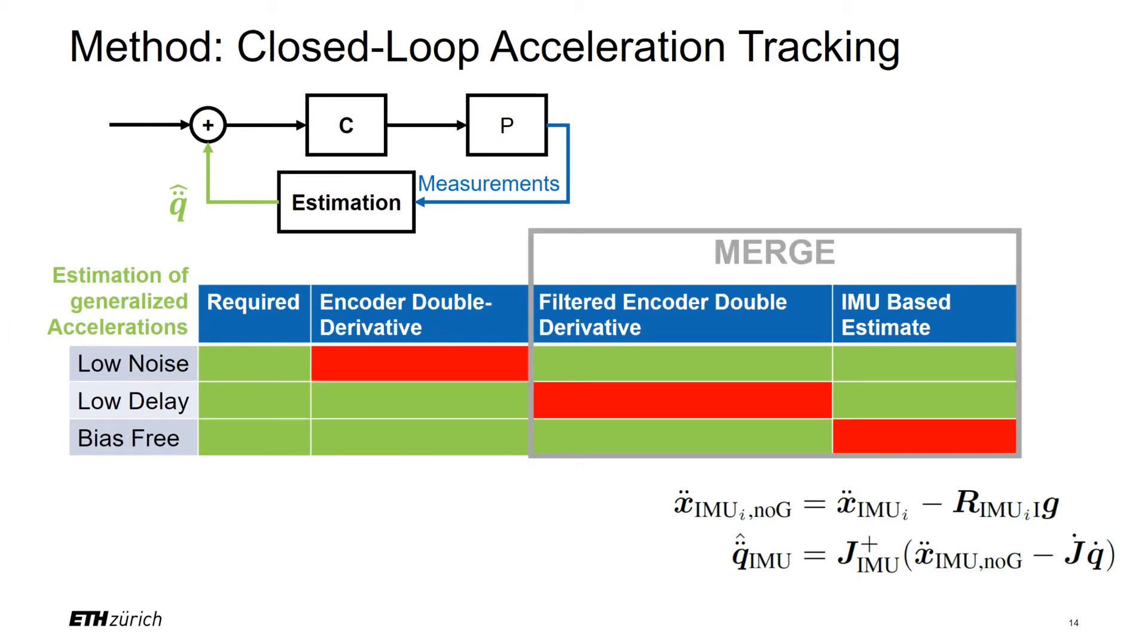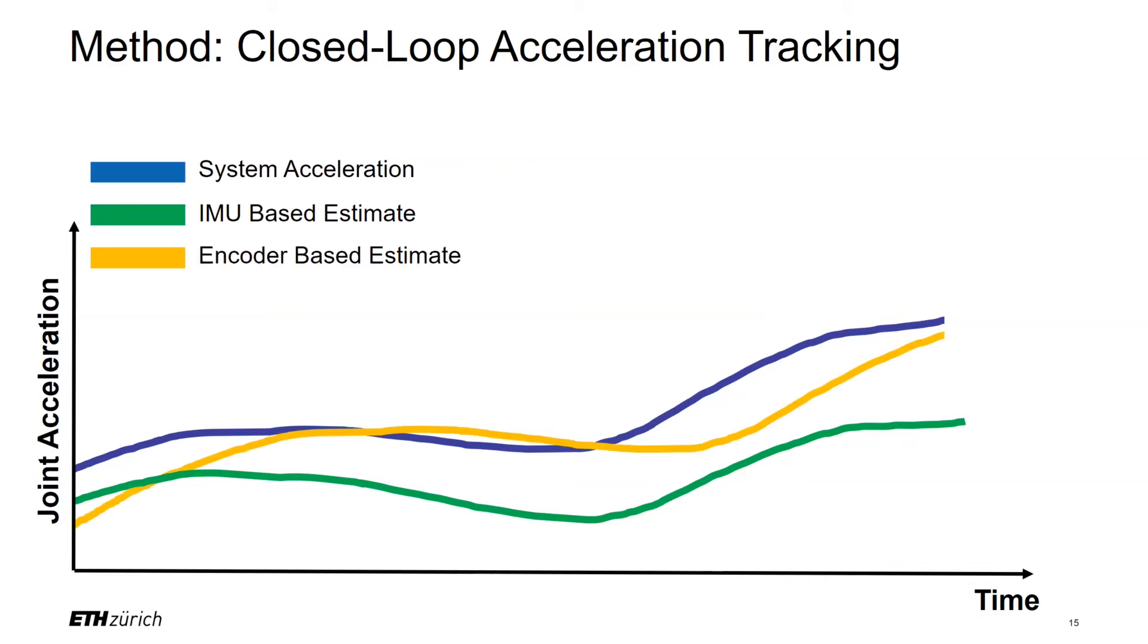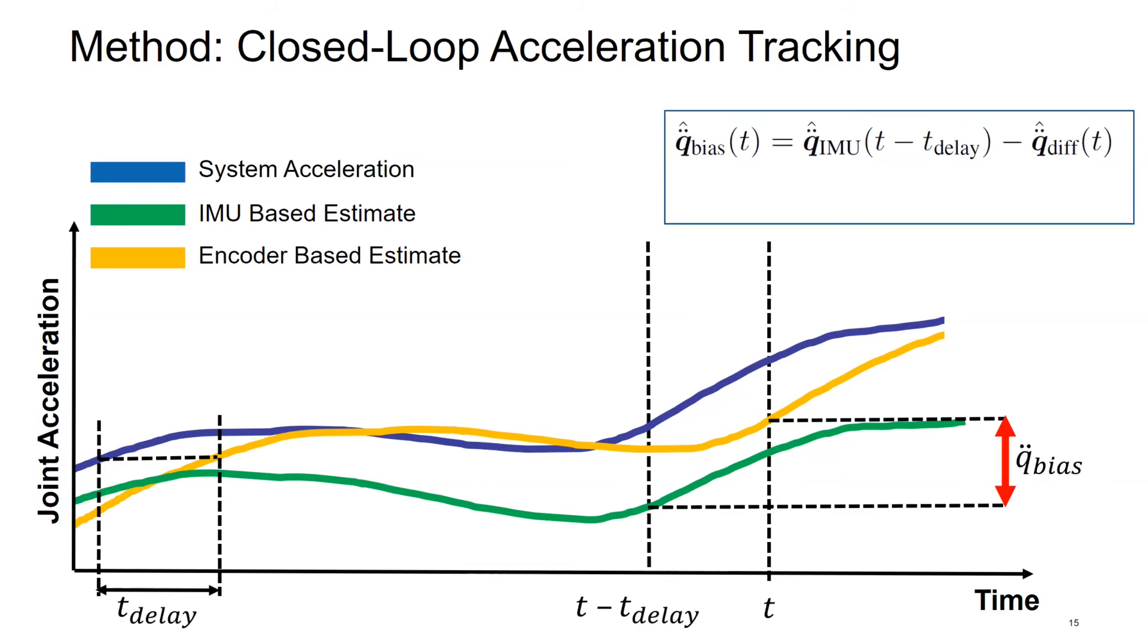As the filtered encoder signal and the IMU-based estimation contain complementary information, a merge of these two could result in a signal that fulfills the requirements. Let's assume the blue line is the real system acceleration. Then the green line is the IMU-based estimate with a time-dependent offset. And the orange line is the encoder-based estimate, which is only delayed. This delay is known by the design of the filter and the derivative method. Using this delay, the bias of the IMU-based signal can be estimated at time t minus t_delay. Using this estimated bias, the IMU-based estimates can be corrected and we achieve a bias-free, non-delayed signal.